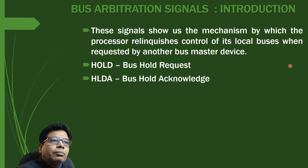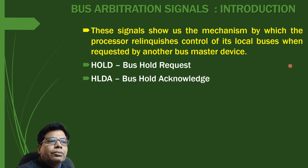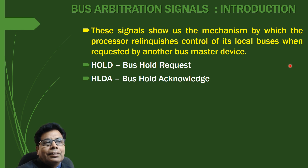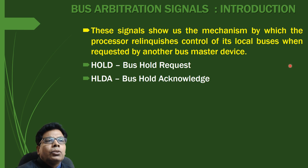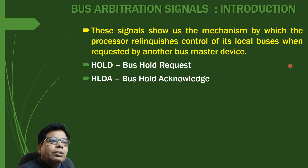We will start with the bus arbitration signals. These signals show us the mechanism by which the processor relinquishes control of its local buses when requested by another master. In the case of a Direct Memory Access DMA operation, the DMA controller will request the processor to relinquish control of its local buses. Here we are going to study two signals: HOLD, that is bus hold request, and HLDA, bus hold acknowledge.